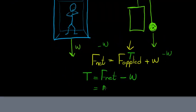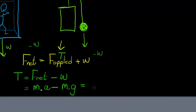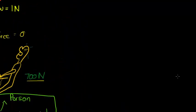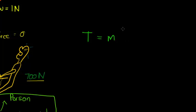From Newton's second law, the net force is mass times acceleration. So the tension equals the mass of the elevator and its occupants times the upward acceleration, minus the weight. Weight is simply mass times gravitational acceleration. We can simplify this: tension equals mass times (acceleration minus gravitational acceleration). So the formula is T = m(a − g), where a is the upward acceleration and g is the gravitational constant.